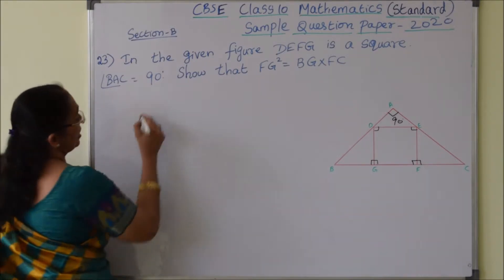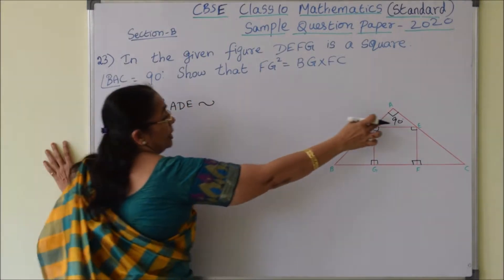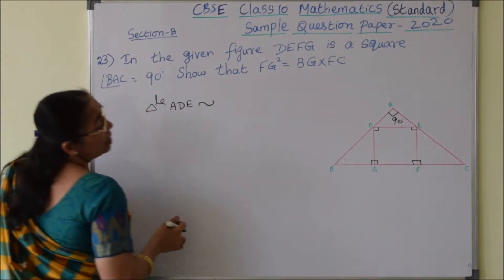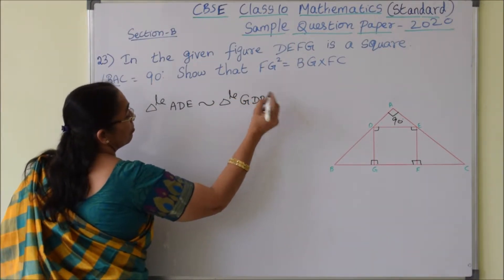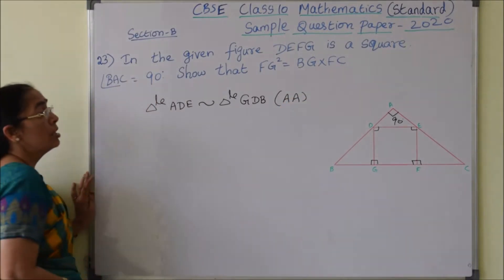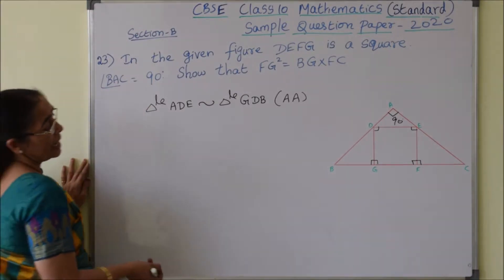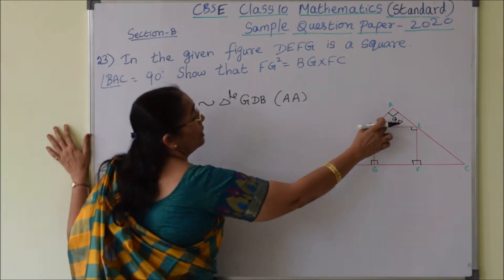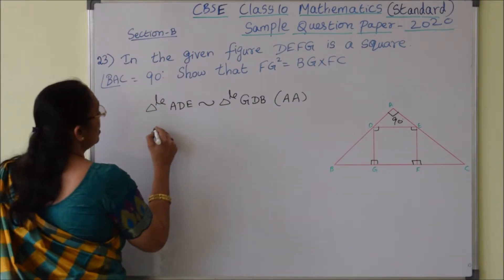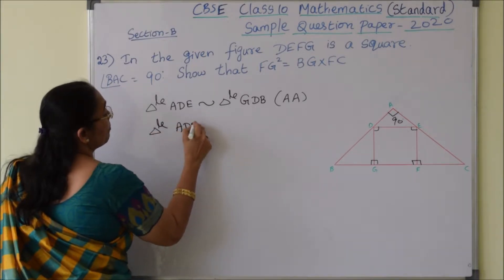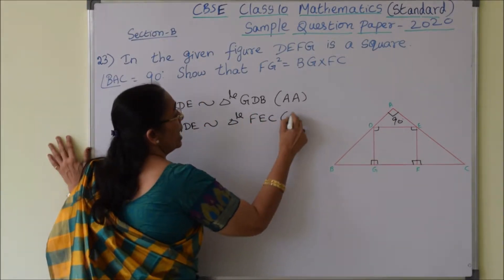From the given information, triangle ADE is similar to triangle GDB by angle-angle criteria. These two triangles are similar because one angle is 90 degrees in both, and again we have alternate angles equal. Similarly, triangle ADE is again similar to triangle FEC by angle-angle criteria.